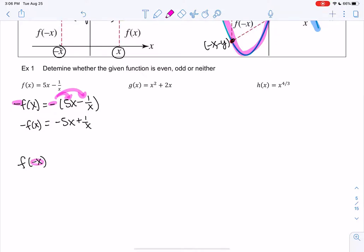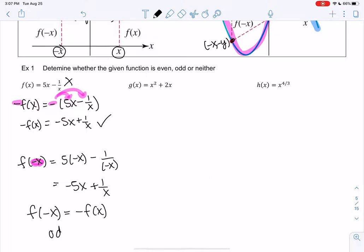So we'll plug in negative x minus 1 over negative x. So we get negative 5x and then we get plus 1 over x. So that doesn't match the original function. But it looks like it matches negative f of x. So f(-x) equals -f(x). So this would be considered an odd function.